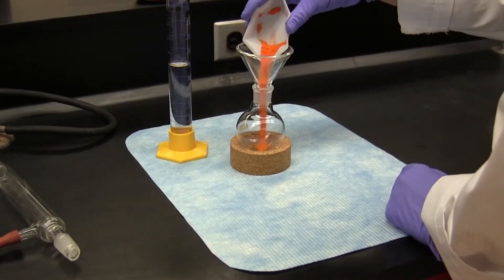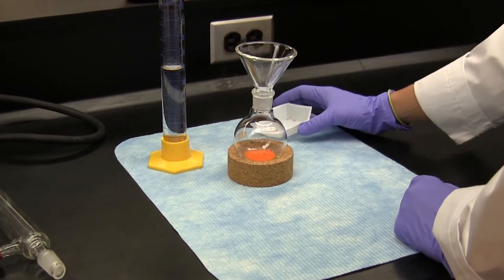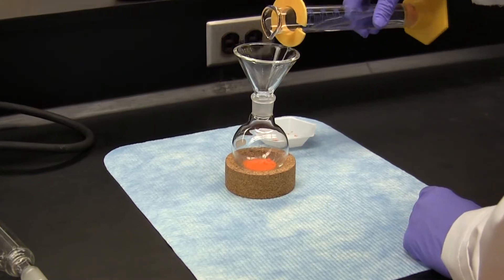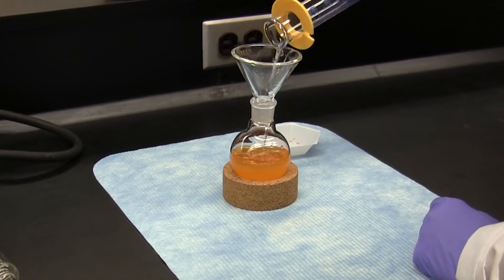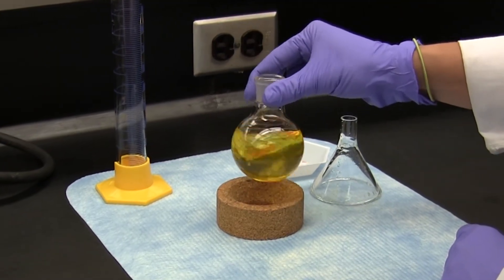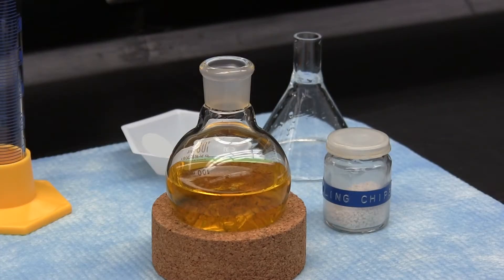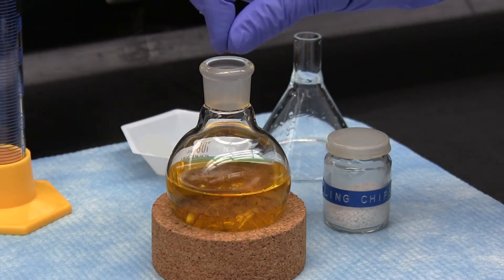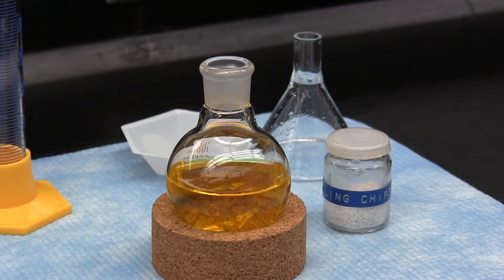So here we see Lauren adding the reactant to an RB flask followed by a solvent. A quick mix and the reactant is now dissolved in the solvent. A boiling chip is added. This helps to prevent bumping once boiling.